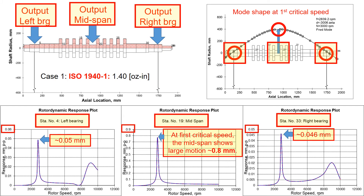If you look into the rotor response graph below, at the first and second critical speeds, the rotor responses show peaks, and you can connect these motions with the mode shapes. As you can see in the top right corner mode shape graph at the first critical speed, the rotor mid-span shows the highest movement. That corresponds with the rotor response plots shown in the graphs below. This rotor response plot is very useful information to compare with the rotor measurements in the field.